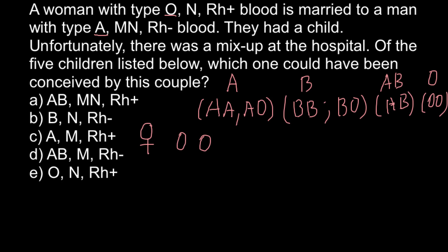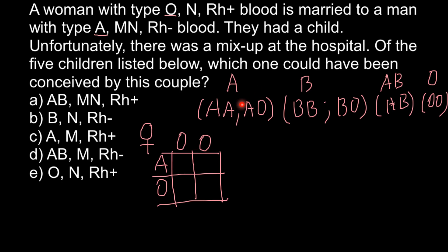We would use the AO genotype for the father instead of AA, because this gives us more different possibilities and we shouldn't exclude any. So looking at the Punnett square, the child could be AO, AO, OO, or OO — giving us blood group A and blood group O, each with 50% probability.